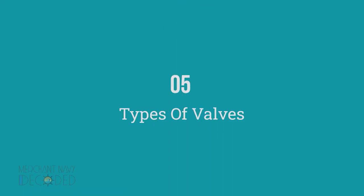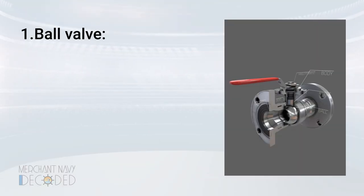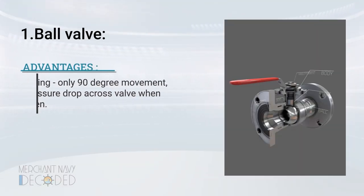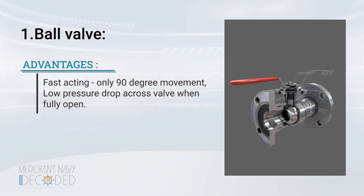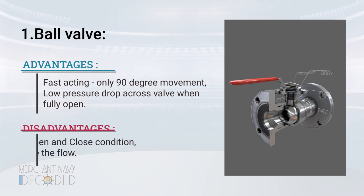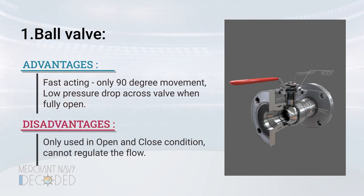Types of valves. Ball valve. Advantages: it is fast acting, requiring only 90 degrees of movement, and has low pressure drop across the valve when fully open. Disadvantages: it is only used in open and closed condition and is not used to regulate the flow.